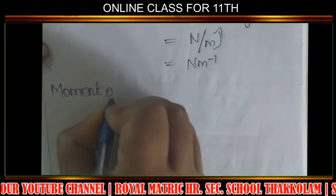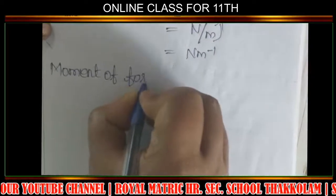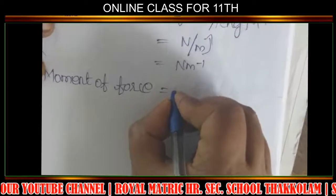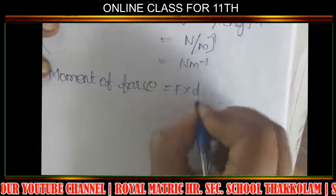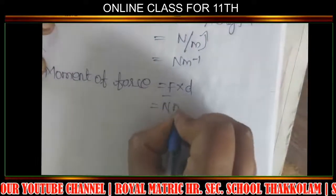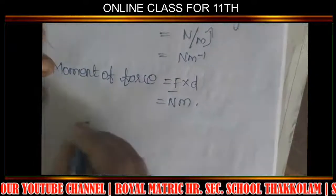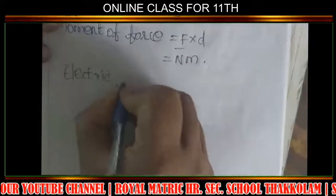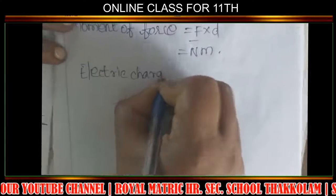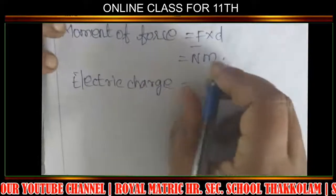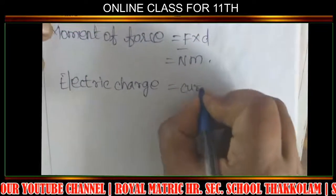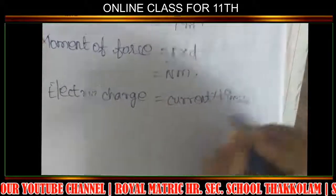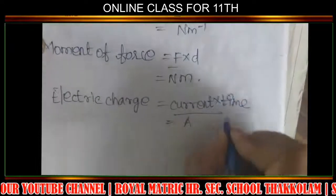Moment of force, also called torque, formula is F into D — force into distance. SI unit is Newton-meter (N·m). Electric charge equals current into time. Current unit is Ampere, time is second.